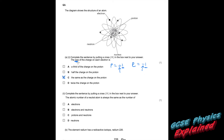You didn't have to worry about whether it was positive or negative for this question. If it said what is the sign of the charge, then obviously one's positive and one's negative. Part two: the atomic number of a neutral atom is always the same as the number of electrons. If it's neutral, however many protons it has will equal the number of electrons — the same number of pluses and minuses, giving an overall charge of zero.